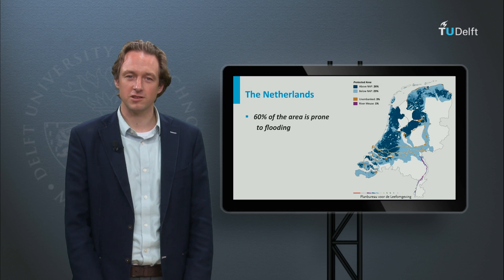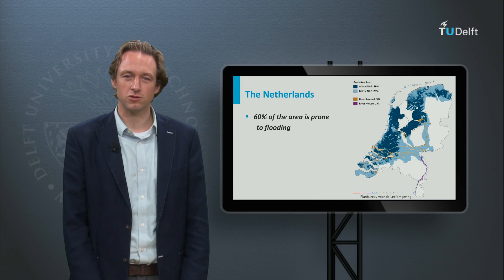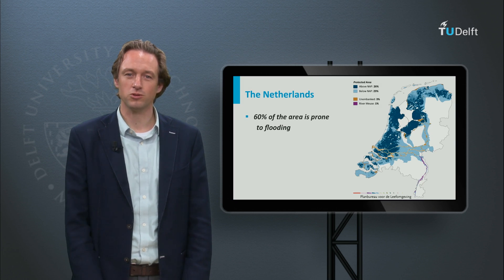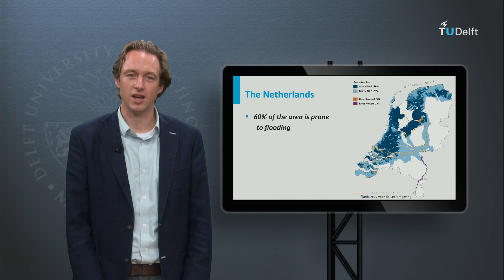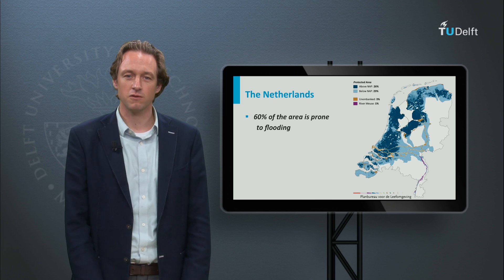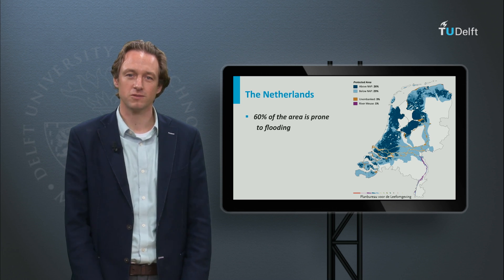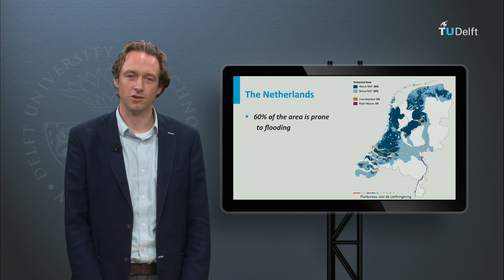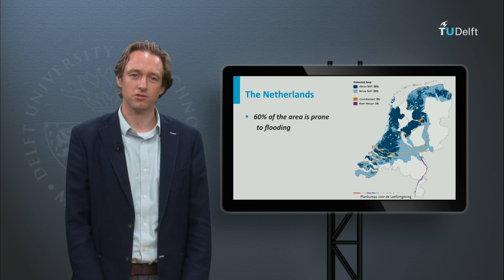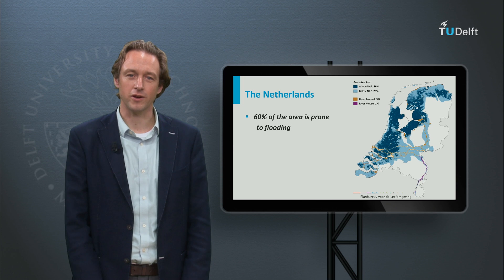In the Netherlands, 60% of the surface is prone to flooding from rivers, sea, and lakes. Flood prevention is thus of national importance. A small part of the country, about 3%, is not protected by dikes but is still prone to flooding.